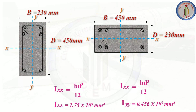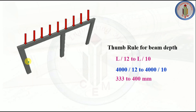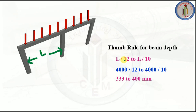It is always good practice to provide depth more than the width of the beam. The thumb rule for finding beam depth: if the clear span between columns is L, then the beam depth is L/12 to L/10.